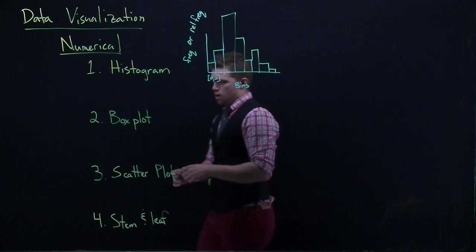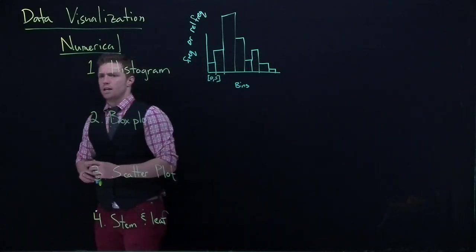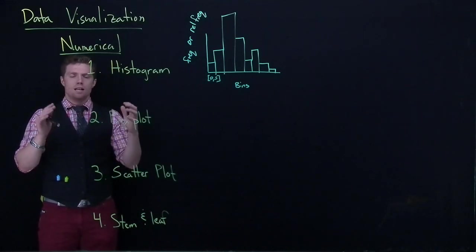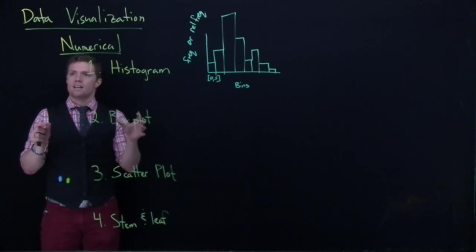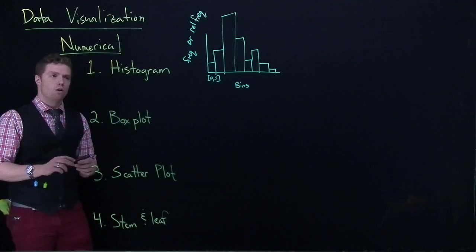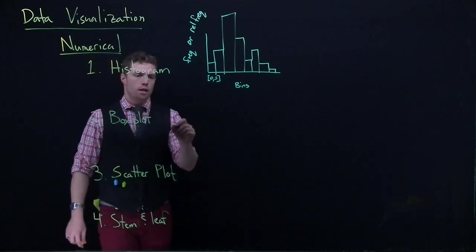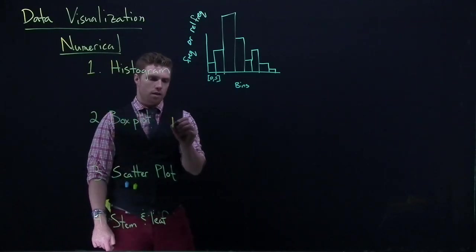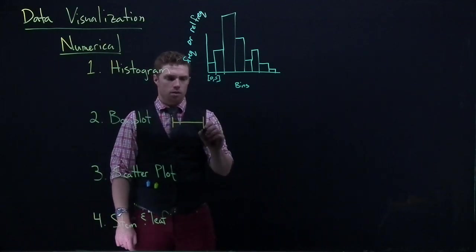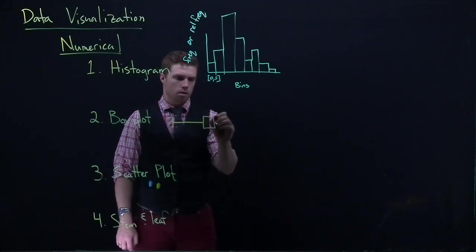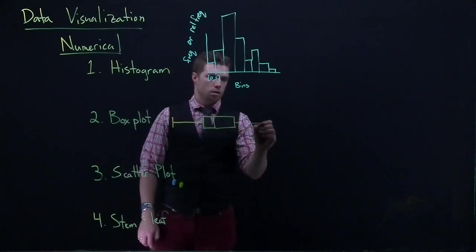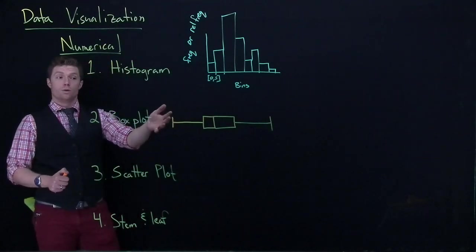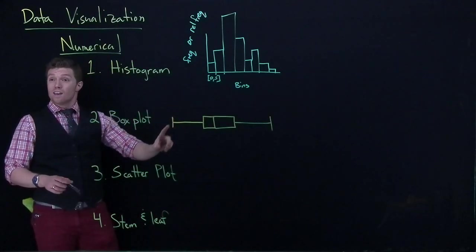Alright, so number two. We've got what are called box plots. Now box plots are handy too, because it helps us kind of show where the middle 50% of the data is. And so it breaks our data up into four pieces, and we call them quartiles. So let's go ahead and draw out kind of what a box plot would look like. So this is what a box plot would actually look like. So I'm going to go ahead and label a few things on here.